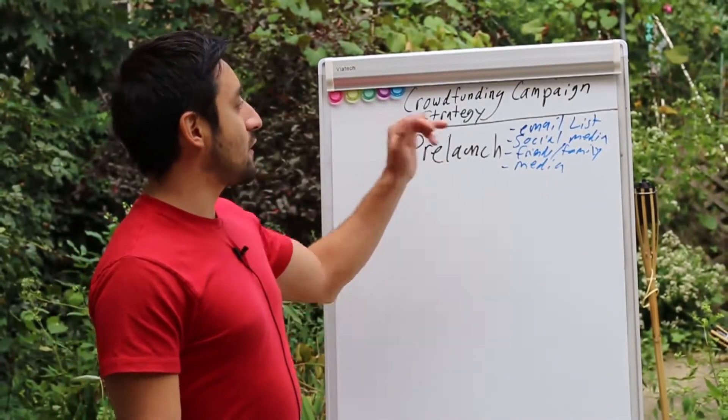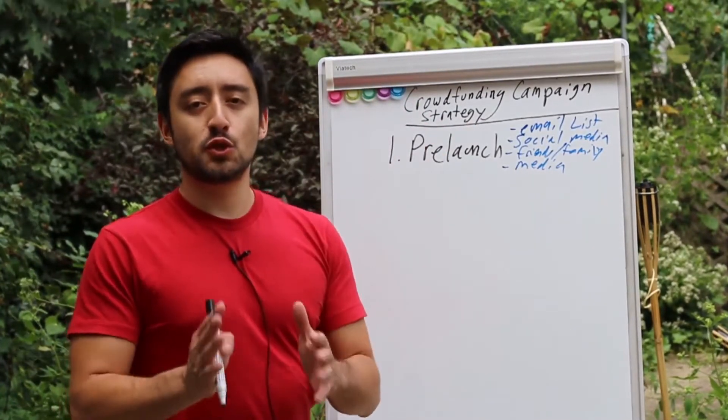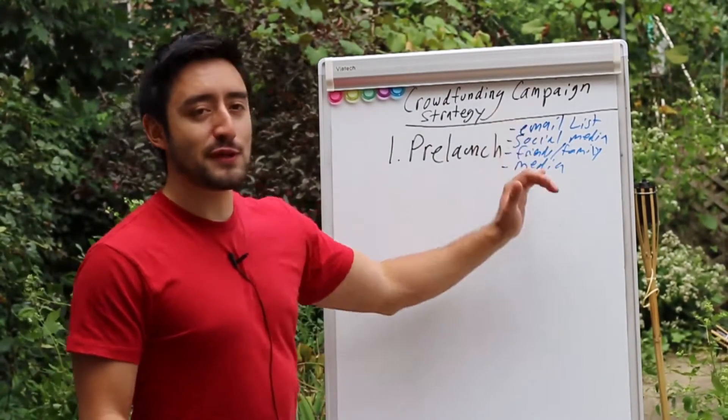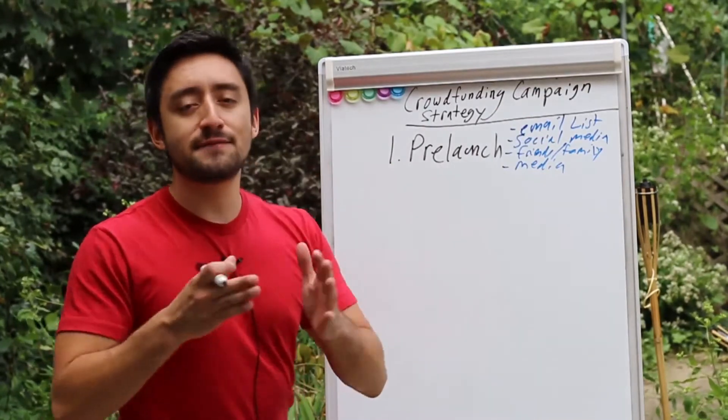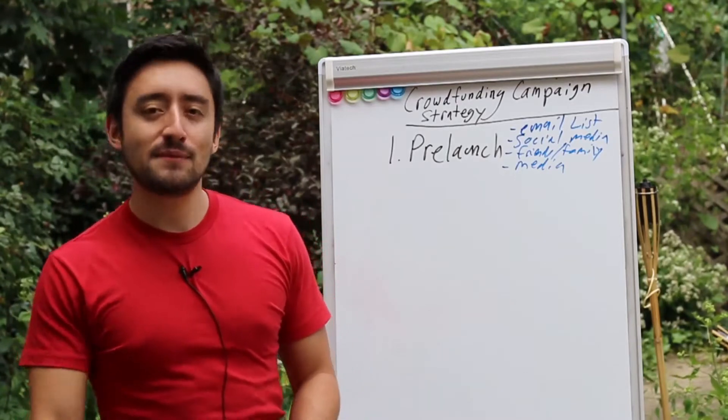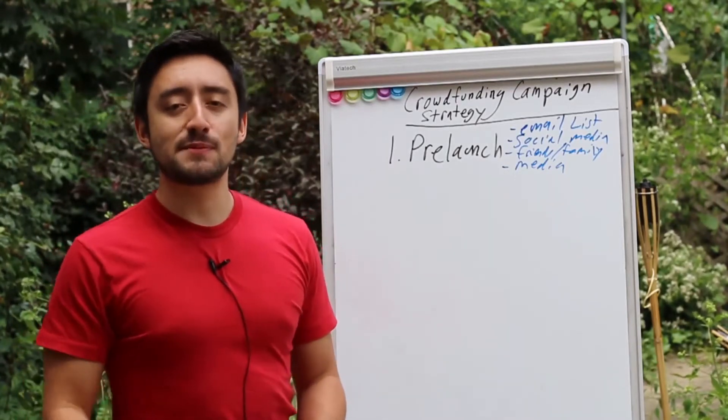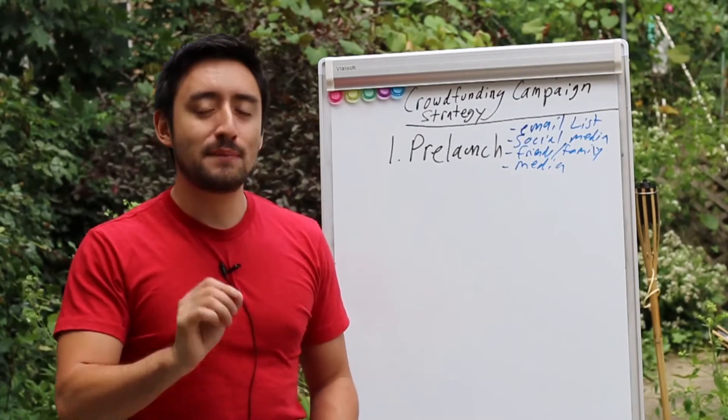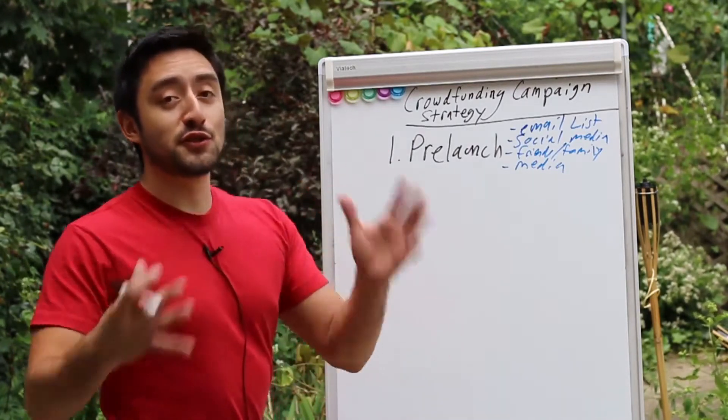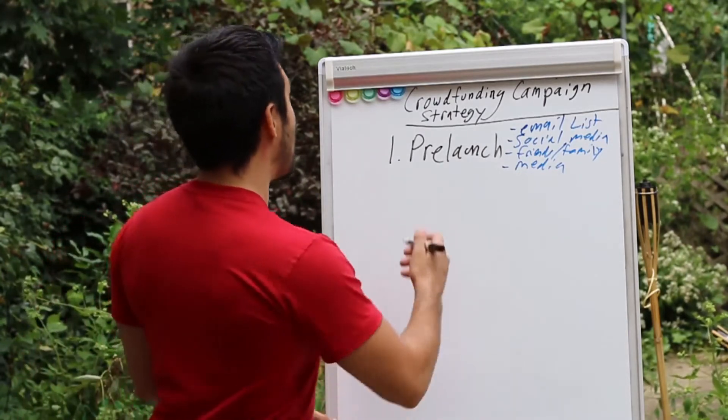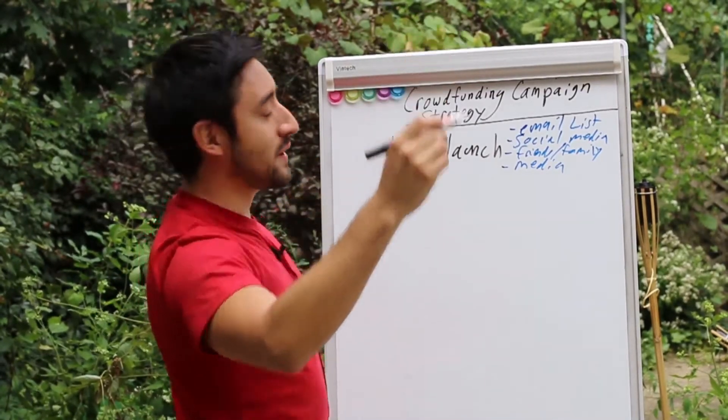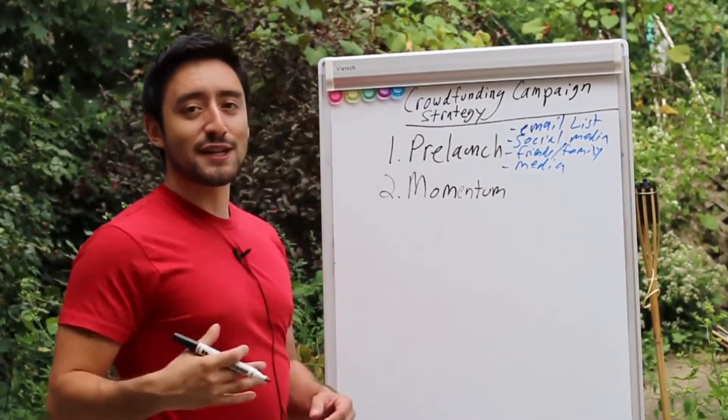Now the second element of an effective crowdfunding campaign strategy actually has to do with when you're live. Because a lot of times when you're live, if you do what I say, you take all these elements, you do an effective pre-launch, you get instant funding on Kickstarter. It's all celebration, handshakes, high fives all the way around the team. And it's awesome. But then something happens. Your campaign begins to lose momentum. It begins to lose the level of funding trajectory, as I like to call it, that your project has.